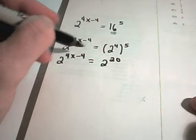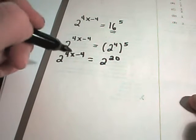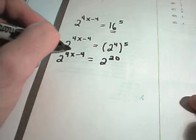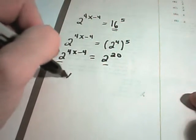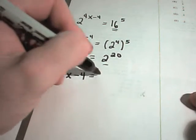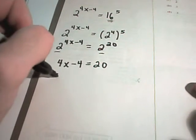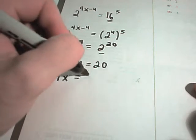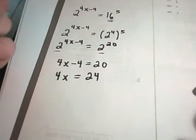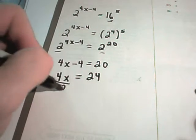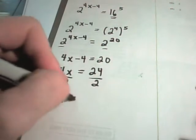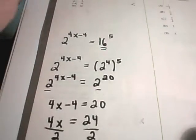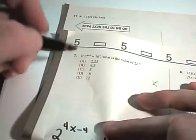So it says 2 raised to the 4x minus 4 equals 2 to the 20. So that means the exponents must be the same because we've got the same base. So we have 4x minus 4 equals 20. Now we can add 4 to both sides. If we add 4, we'll get 24. You could solve for x, but they want to know the value of 2x. So I'm simply going to divide each side by 2. And I'll get that 2x is equal to 12. So that'll be your answer, just 12.